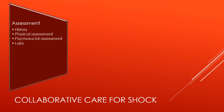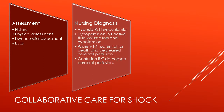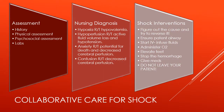Assessment for shock includes a history, physical assessment, and psychosocial assessment — you need to make focused assessments and may also do labs. Nursing diagnoses can include hypoxia related to hypovolemia, hypoperfusion related to active fluid volume loss and hypotension, and anxiety related to potential for death and decreased cerebral perfusion, or confusion related to decreased cerebral perfusion. To manage shock, figure out the cause and try to reverse it: ensure a patent airway, start an IV, infuse fluids, administer oxygen, elevate feet, stop the hemorrhage, give medications, and do not leave your patient.